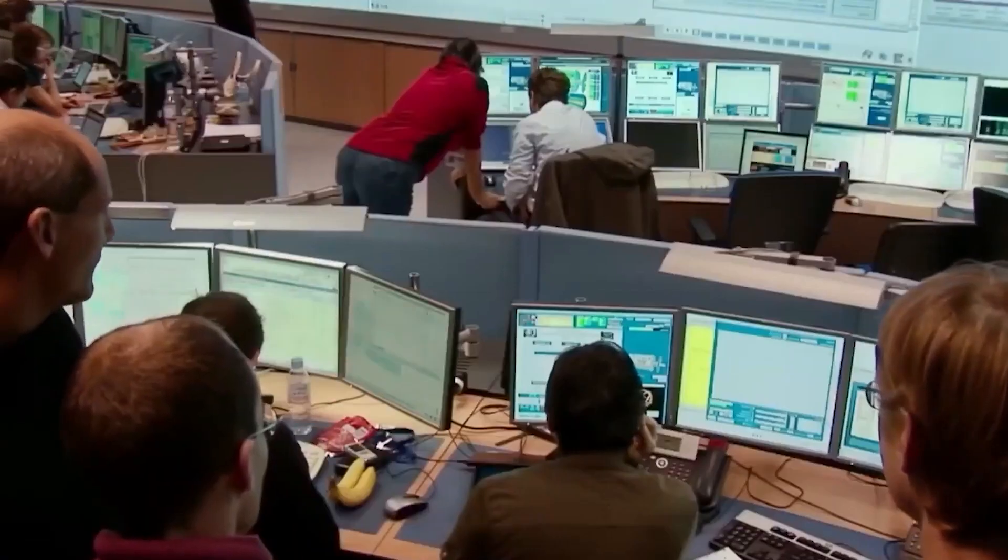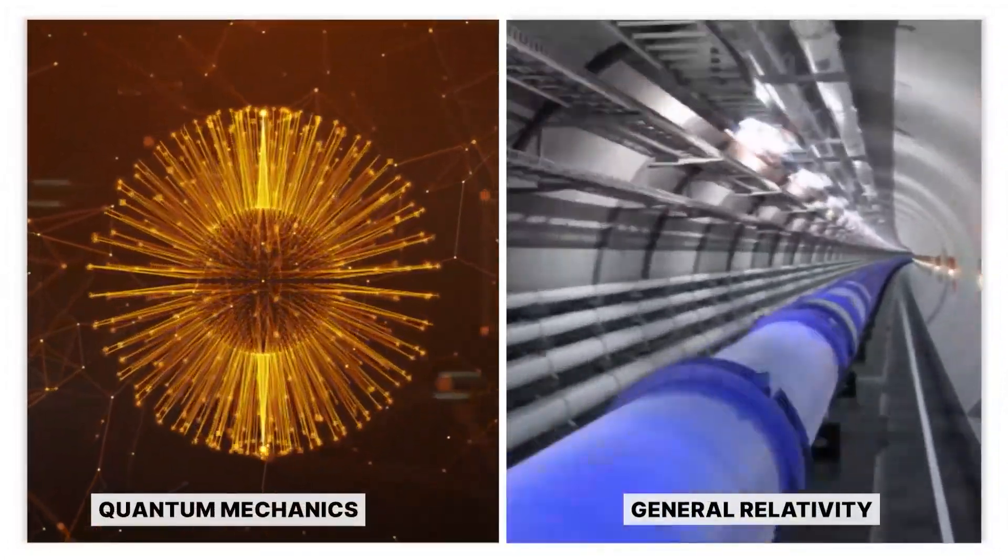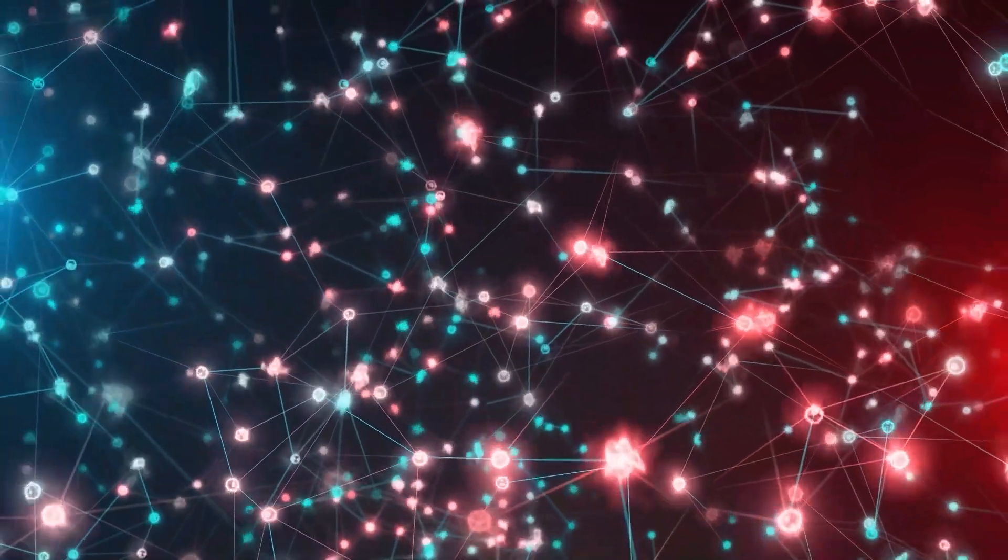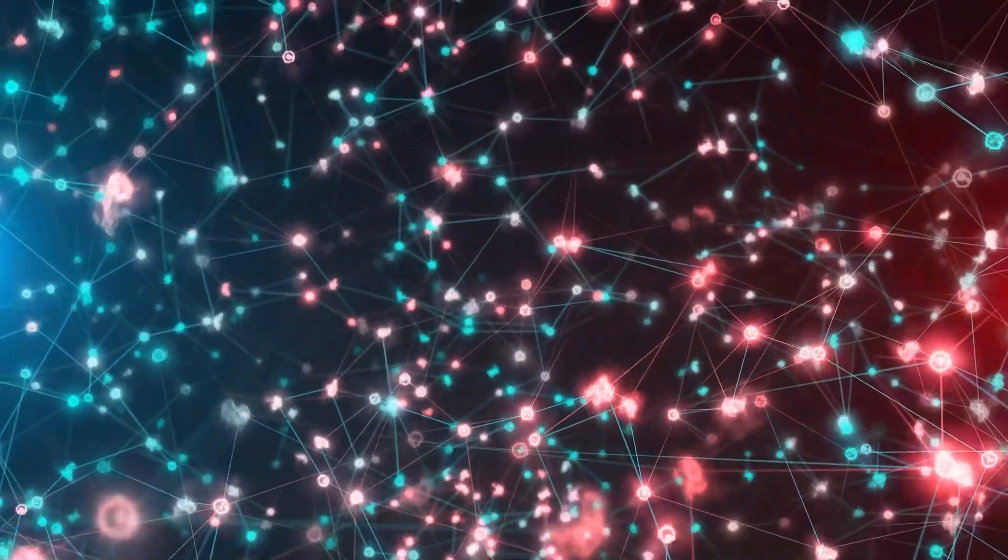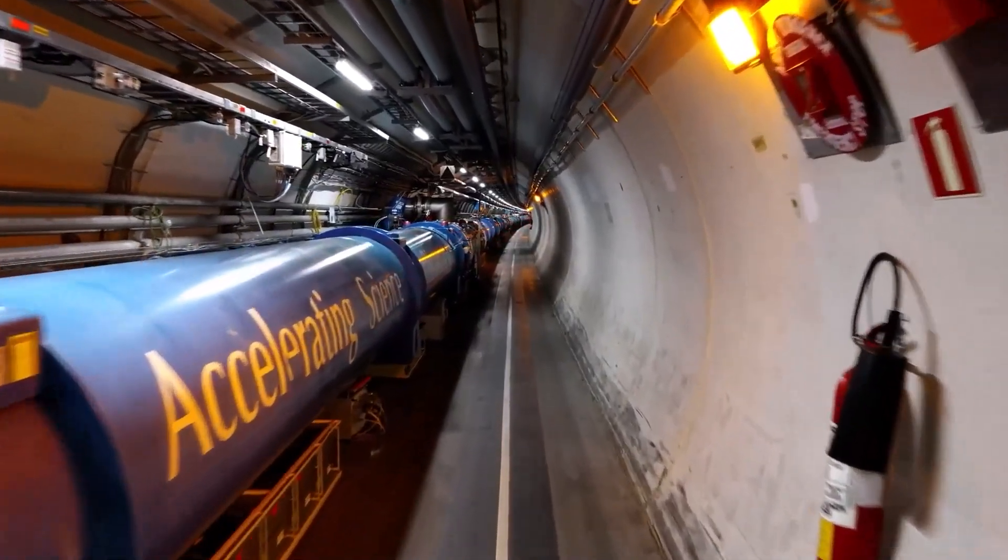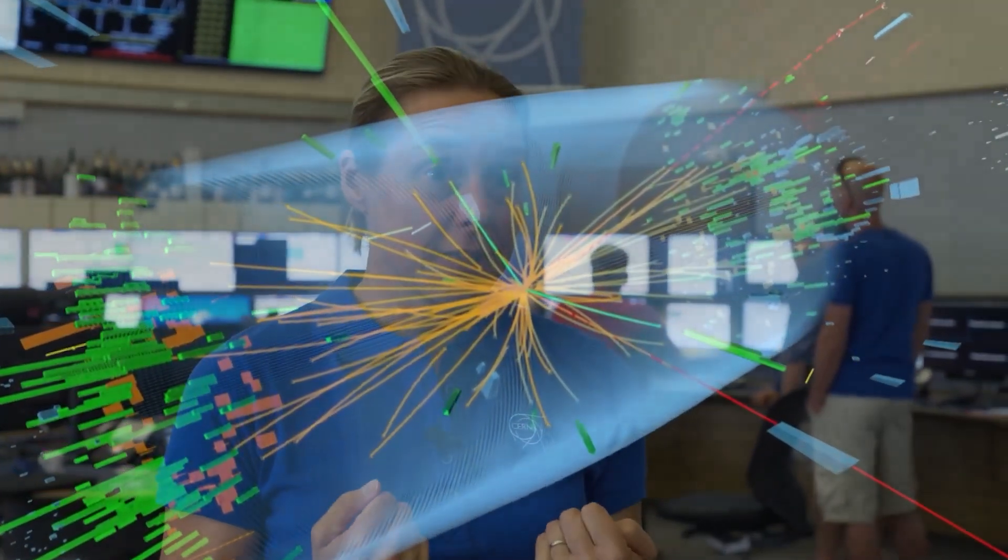What the team saw in the data was something that defied both quantum mechanics and general relativity. The laws of physics, as we know them, simply do not allow a singularity to be torn in two. So what does it mean when the impossible happens right in front of your eyes? It means you've stumbled into a game with rules you don't understand.